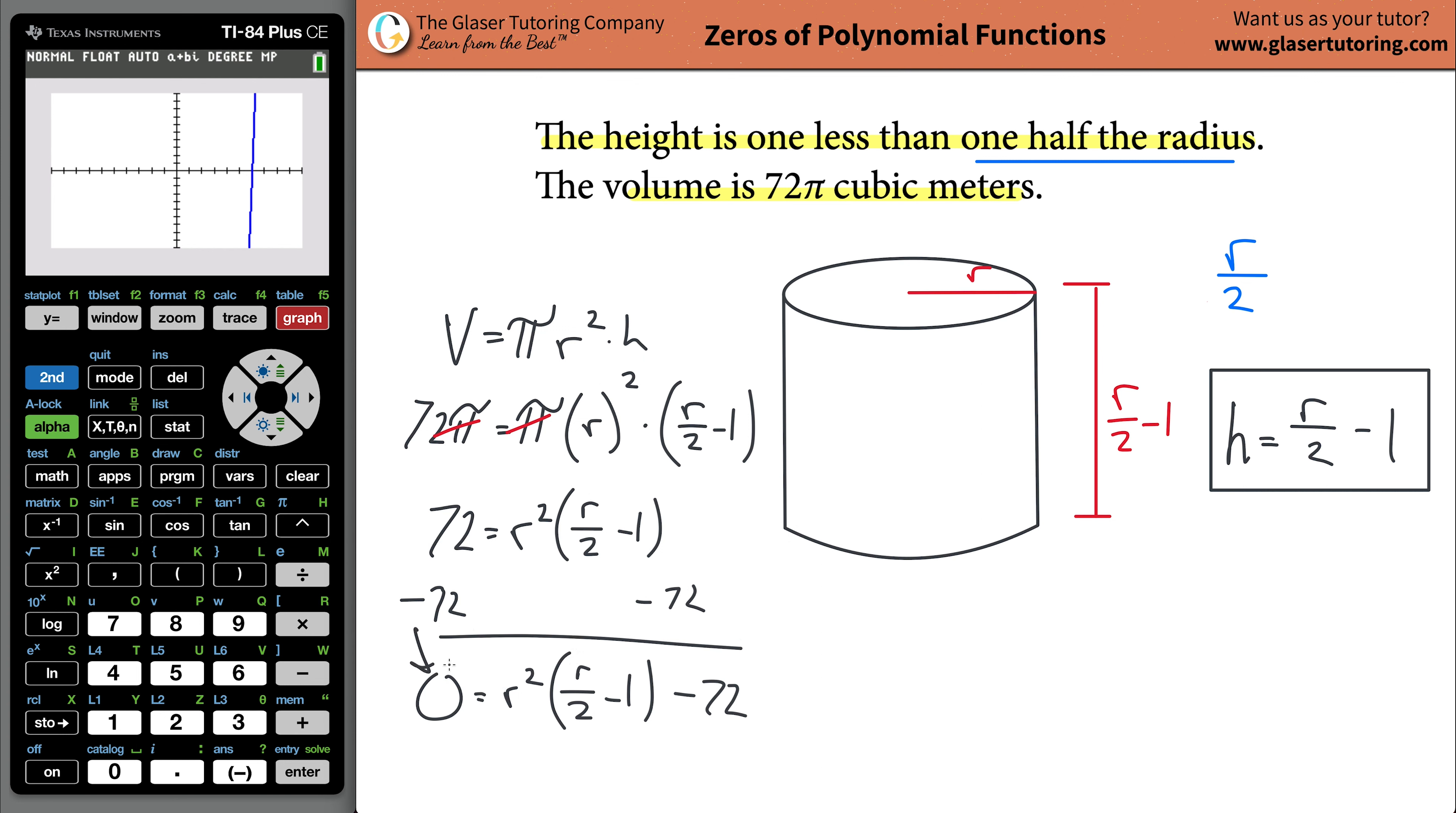So whenever you set something equal - so this is the fact. Whenever, well, this is a fact. When you set an equation equal to zero, and you graph the other side, whatever the x-intercept is, is a solution for the variable. So what you can do in the calculator, you can go second, calc, scroll down to zero, hit enter, and you're going to use this function.